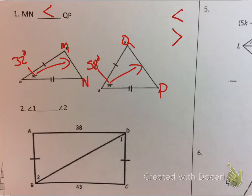Same thing here. Angle 1 is greater than angle 2. Why? Because angle 1 corresponds to the 43 and angle 2 corresponds to the 38. Simple, simple, right?